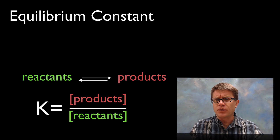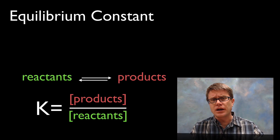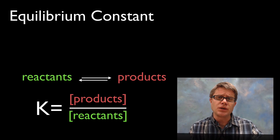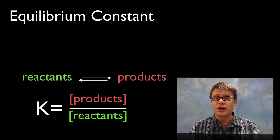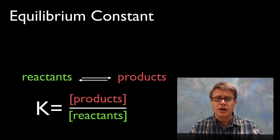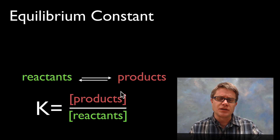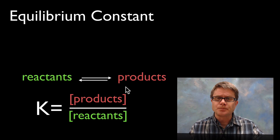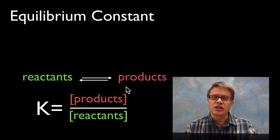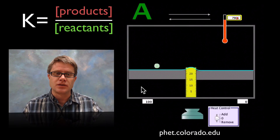To figure out if we're favoring products or reactants, we can use a term called the equilibrium constant, which really works with reversible equations. So if we imagine we have reactants and products, the equilibrium constant is simply the concentration of products divided by the concentration of reactants.